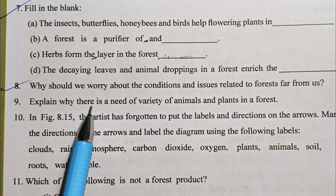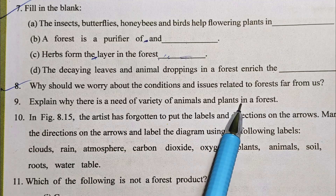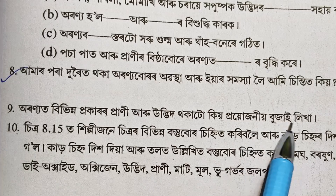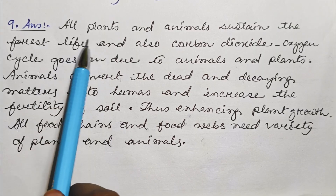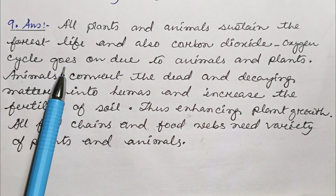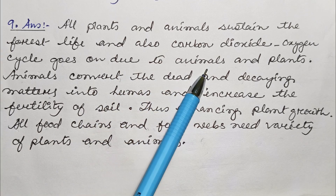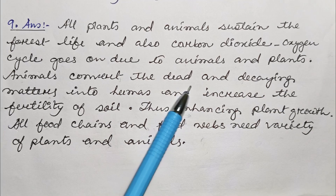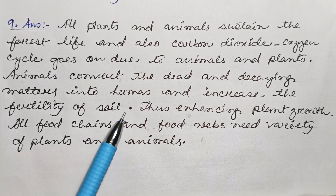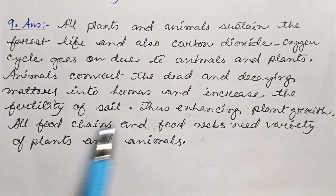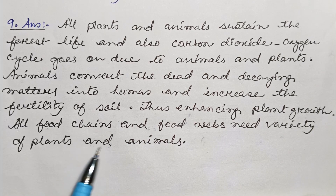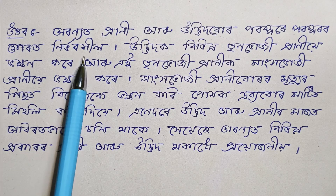Question number 9: Explain why there is a need of variety of animals and plants in a forest. All plants and animals sustain the forest life and the carbon dioxide-oxygen cycle goes on due to animals and plants. Animals convert the dead and decaying matters into humus and increase the fertility of soil, thus enhancing plants' growth. All food chains and food webs need a variety of plants and animals.